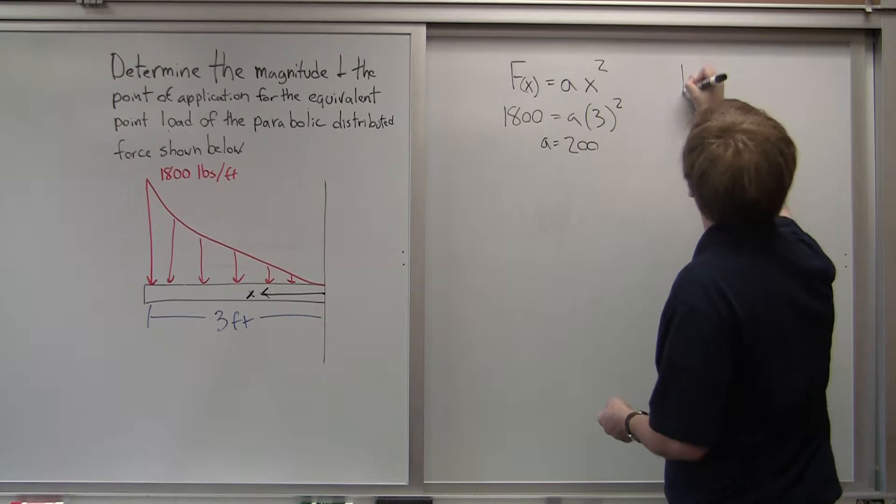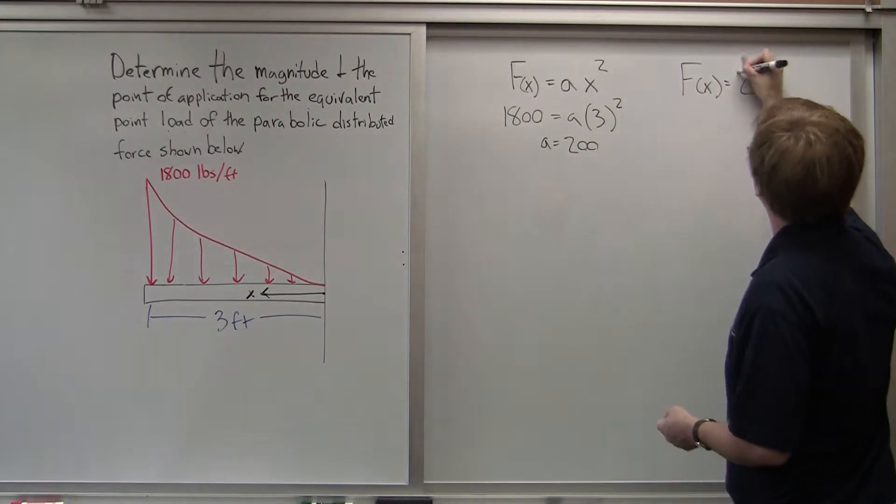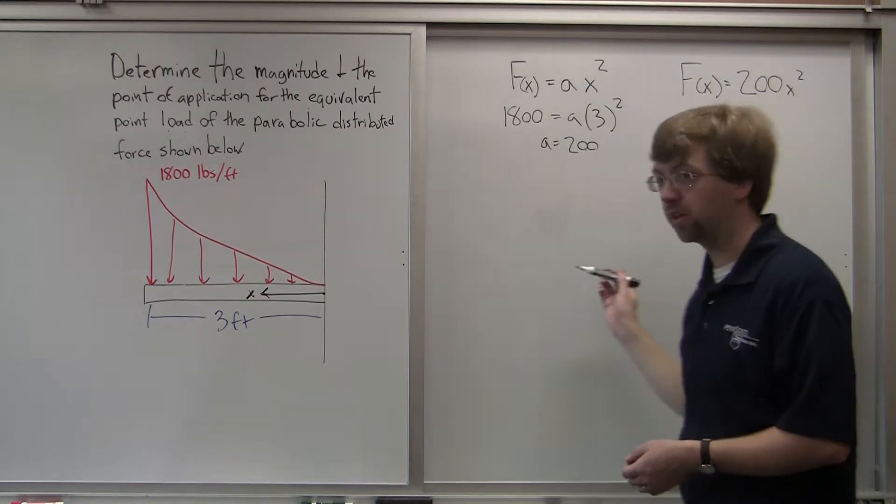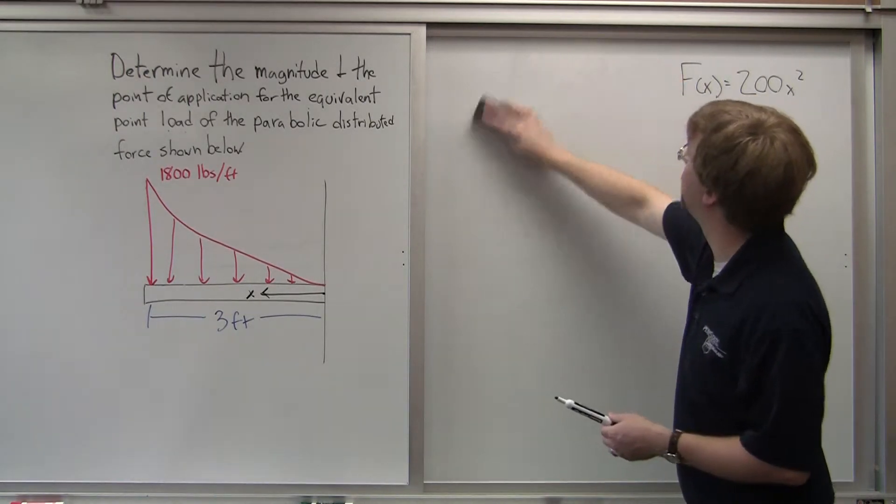So f of x is going to be equal to 200 x squared. And x again is going to the left. So that's how we solve for f of x there.